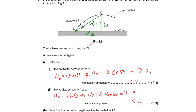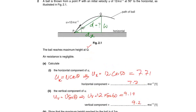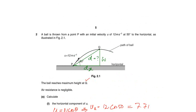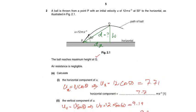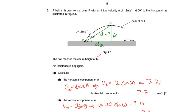A ball is thrown from a point P with an initial velocity u of 12 meters per second at an angle of 50 degrees to the horizontal. The ball reaches maximum height at point Q.